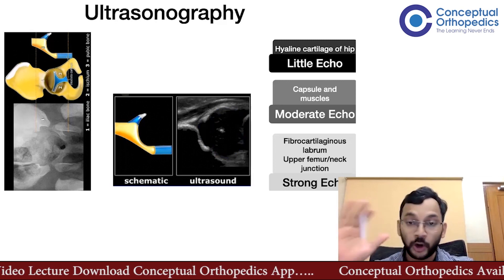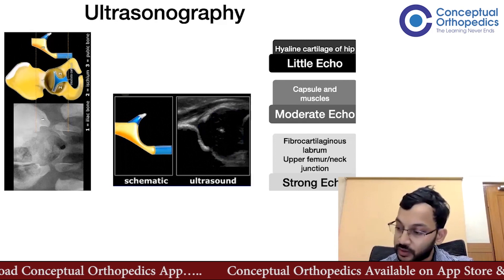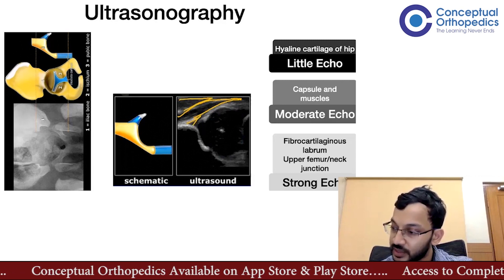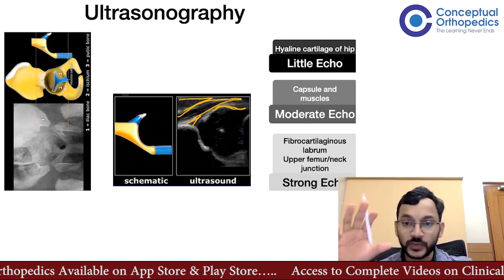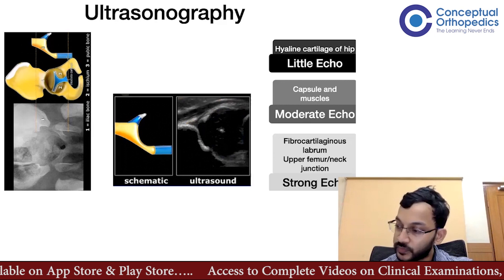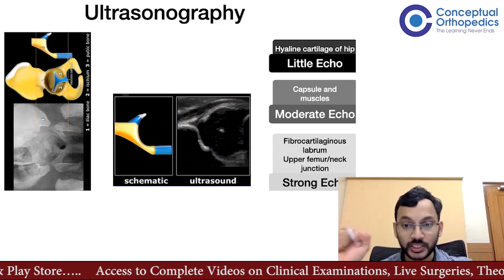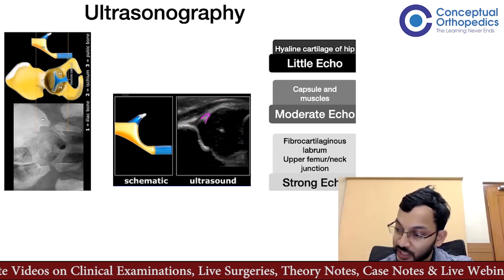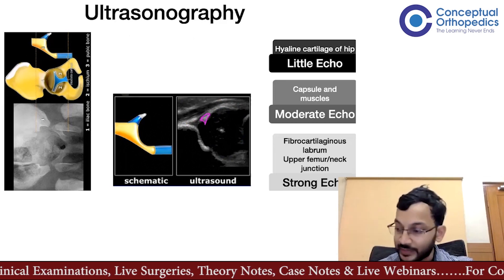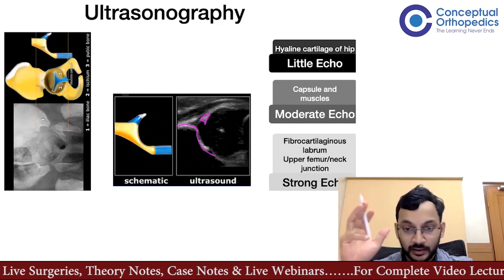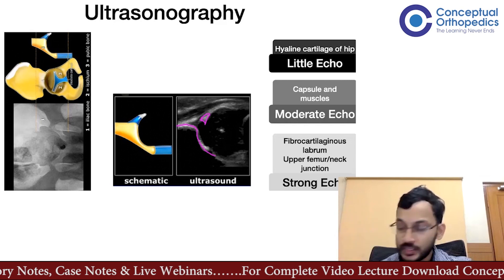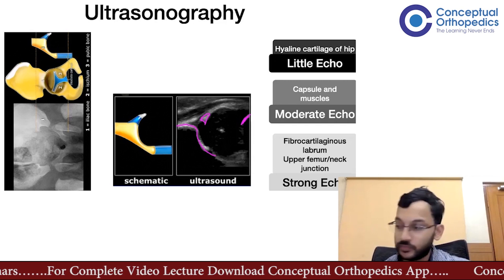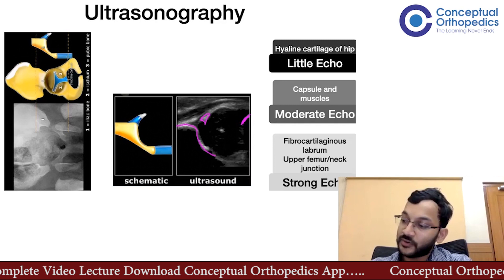Next we have moderate echo structures, which are the capsule and the muscles — the gluteus minimus, gluteus medius on top, the rectus femoris, and the capsule. Lastly, we have strong echoes, which come from more fibrous or bony structures. The fibrocartilaginous labrum produces a strong echo because it's fibrotic, and so does the innominate bone as well as the junction of the femoral head and neck.